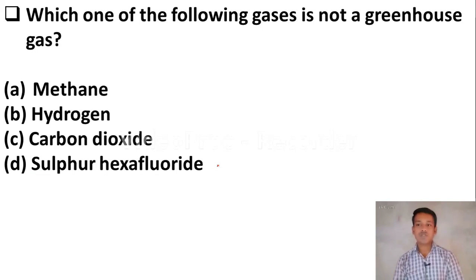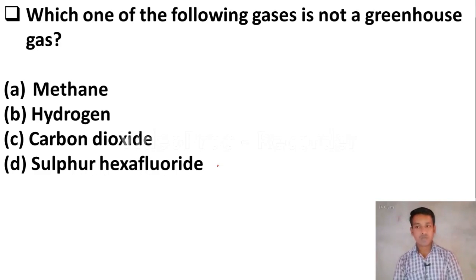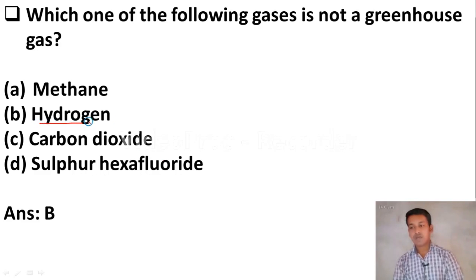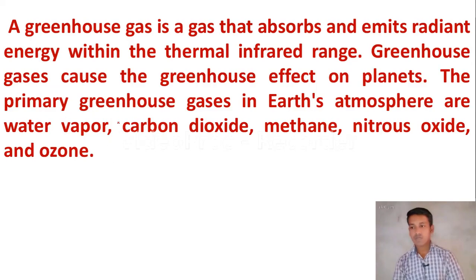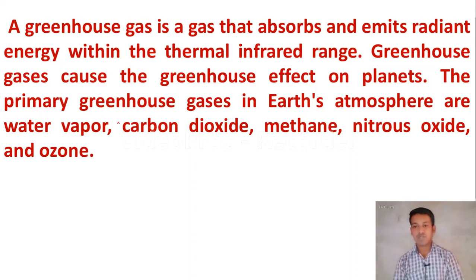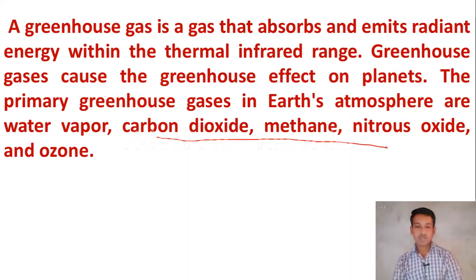Next question: which one of the following gases is not a greenhouse gas? Option A, methane. Option B, hydrogen. Option C, carbon dioxide. Option D, sulfur hexafluoride. The right answer is Option B — hydrogen is not a greenhouse gas. A greenhouse gas is a gas that absorbs and emits radiant energy within the thermal infrared range. The greenhouse gases are water vapor, carbon dioxide, methane, nitrous oxide, and ozone. Hydrogen is not a greenhouse gas.